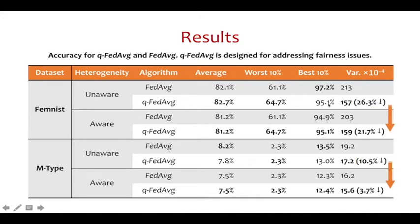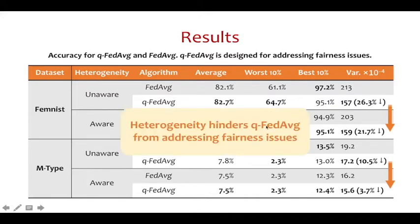However, when heterogeneity is introduced, the variance reduction decreases on all the datasets, indicating that heterogeneity hinders QFEDAVG from addressing fairness issues.